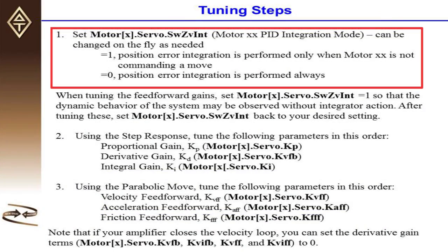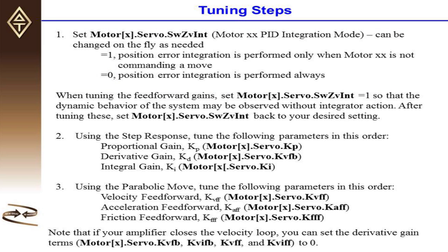The first step to tuning your motor is to set the integration mode parameter, motorx.servo.sw.zvint, as desired. When you set it equal to 1, position error integration is performed only when the motor is not commanding a move. If you set it equal to 0, position error integration is performed always. We recommend setting it equal to 0 when tuning your step response in step 2, then equal to 1 when tuning the parabolic movement in step 3, then back to 0 after you've finished tuning.